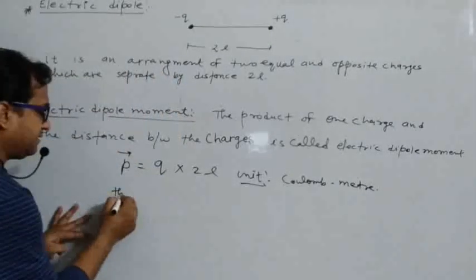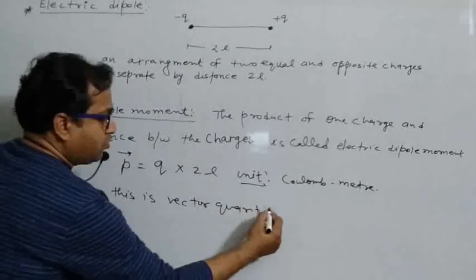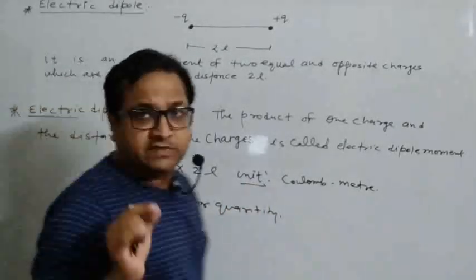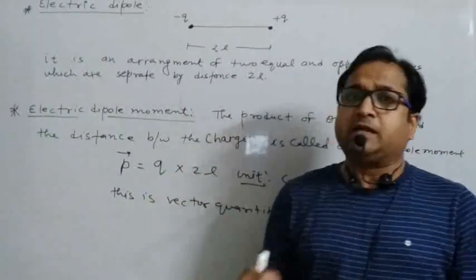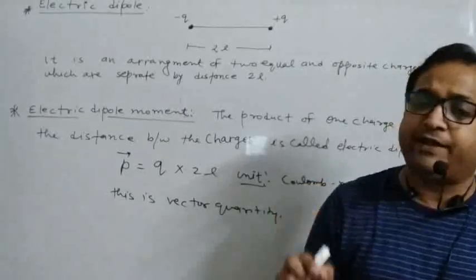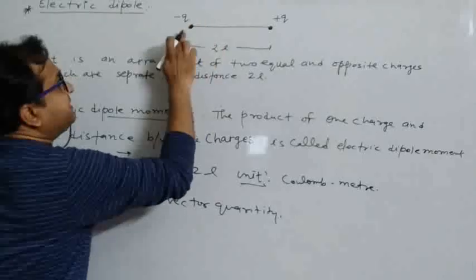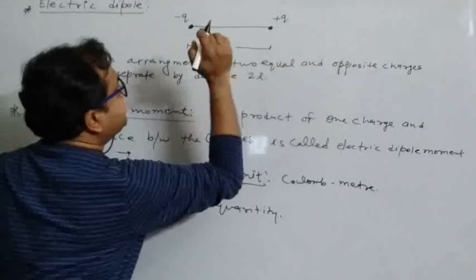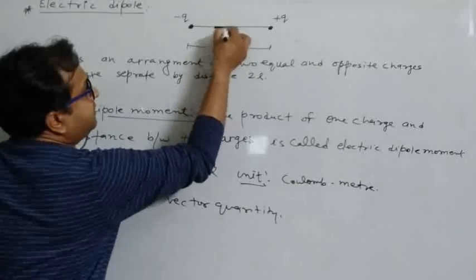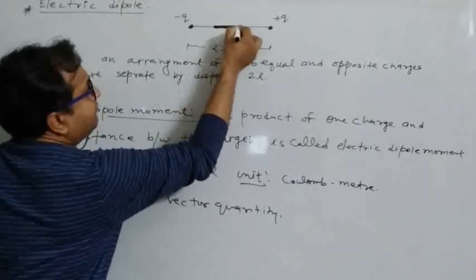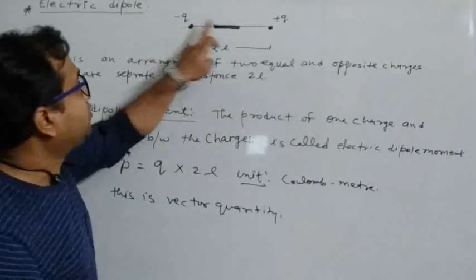Since vector p is a vector quantity, what is its direction? The direction of vector p is always from minus q to plus q. So if this is the minus q and this is the plus q, the direction of the electric dipole moment is always from minus q to plus q.